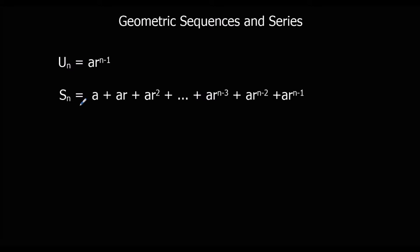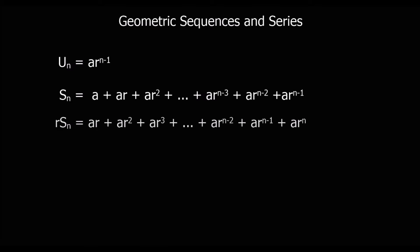So if we had 10 terms, it would be ar to the power of 9. If we had 20 terms, ar to the power of 19. If we had 100 terms, ar to the power of 99. That's what the sum is — the sum is adding all the terms up. But we need to make this into a formula, so the way we do it is we multiply every single term by r.